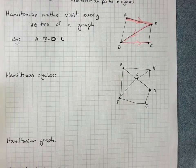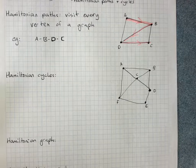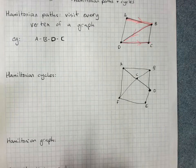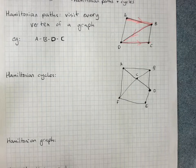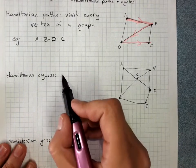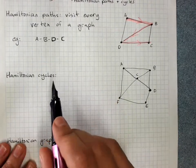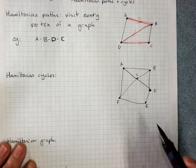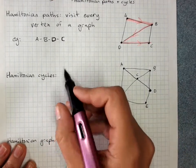Now a cycle has no repeated vertices, but it does start and end at the same vertex, so that vertex isn't counted. So obviously, a Hamiltonian cycle is a path that starts and finishes at the same vertex and visits every vertex.